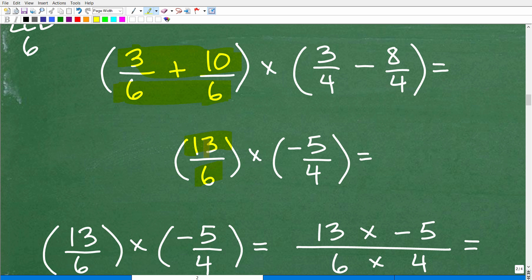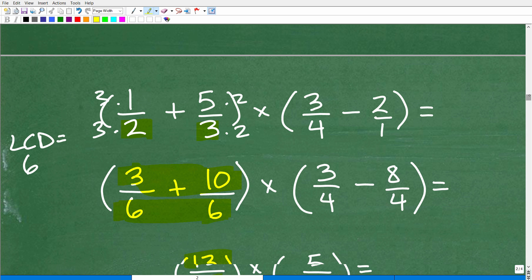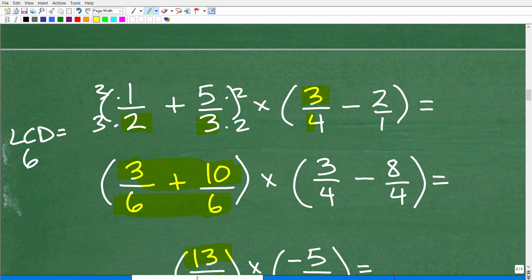And then over here, in this fraction, we have three over four over two over one. These are not the common denominators, but the LCD of this fraction is four. So I just multiply that by four, this by four. And we have eight over four.